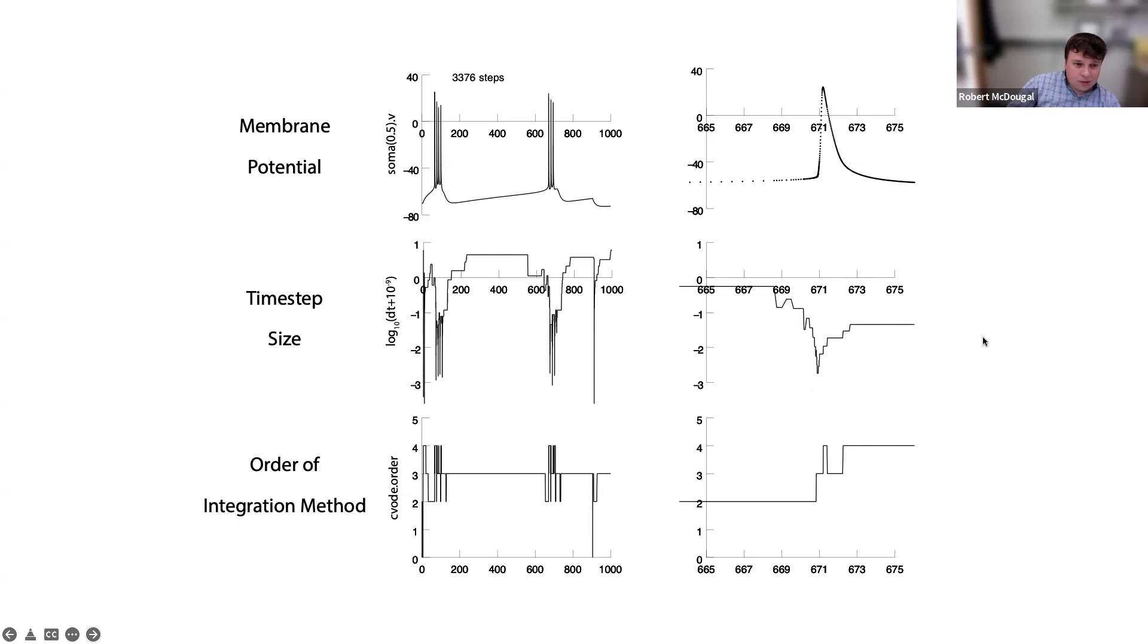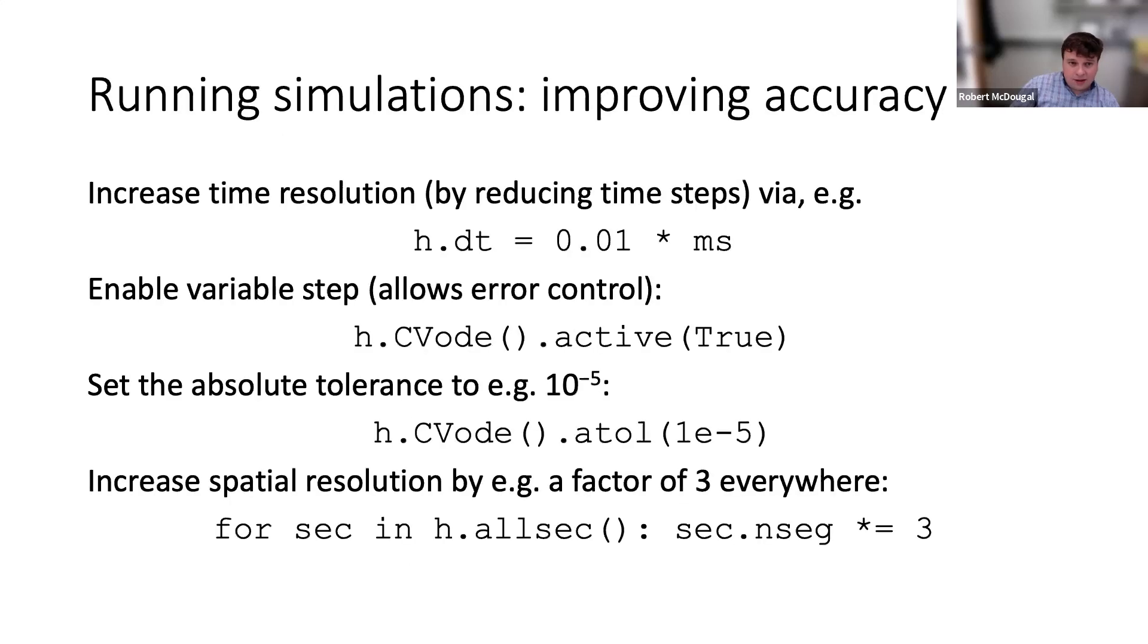Additionally, cvode—mathematically there's this thing known as the order of the integration method, has to do with how much error it introduces for a given dt. cvode starts ramping that up as well whenever things are changing rapidly, so it handles all of this stuff for us automatically. All we had to do is flip the flag to turn cvode active to true.